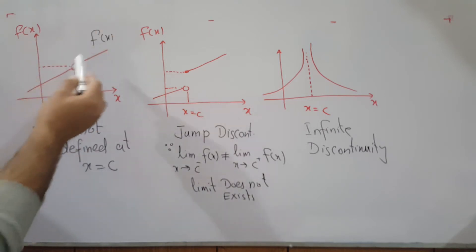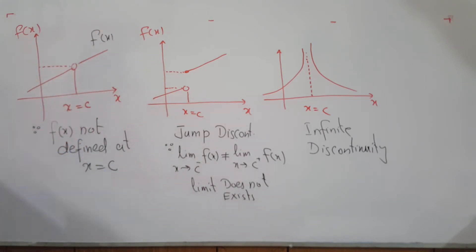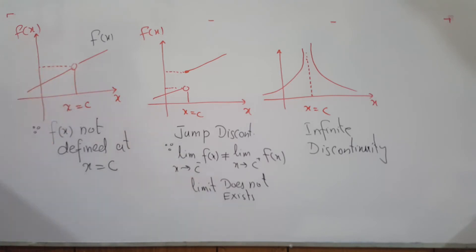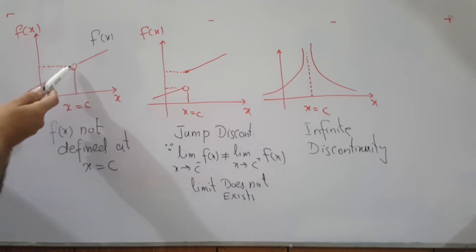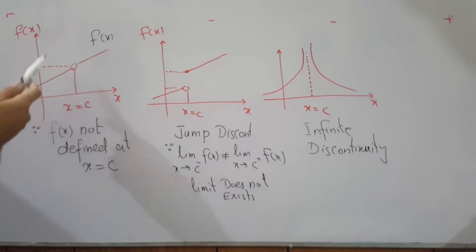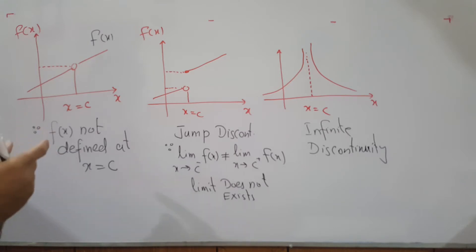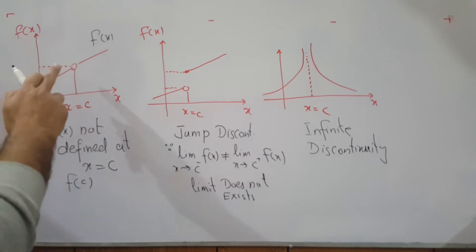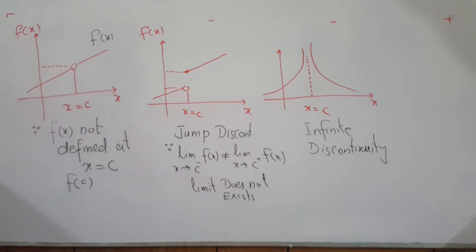There are a few types of discontinuity. If you have a function f of x whose graph has a hole in it, this function is discontinuous at x equals c because the function is not defined there. The first condition requires that the function be defined at that point, and since it's not, this is not continuous.